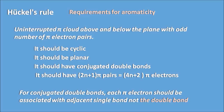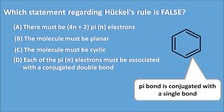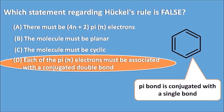For conjugated double bonds, each pi electron should be associated with an adjacent single bond, not with a double bond. Reviewing the options: A (4n+2 pi electrons) is true, B (must be planar) is true, C (must be cyclic) is true. Option D — each pi electron must be associated with a conjugated double bond — is false, because in benzene the pi electrons are conjugated with single bonds, not double bonds. So D is the false statement and the answer.